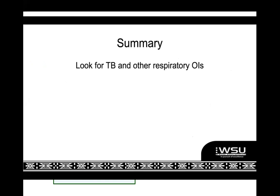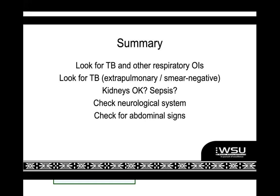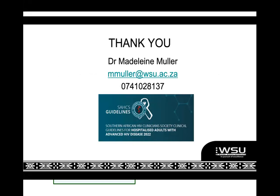In summary: when you start off, look always for TB and your respiratory opportunistic infections. Then look for any extra-pulmonary TB if you don't find anything there. Check the kidneys, always wonder about sepsis, check the neurological system because that can kill your patient very quickly, look at the abdominal system, and watch out for the skin, mucous membranes, and other STIs. Thank you very much, everybody. I hope this has given you a taste of what's in that guideline. I haven't gone into detail on every chapter, but they're all great — they give a very good approach to infectious disease workup of any of these systems and are very worthwhile spending time with.